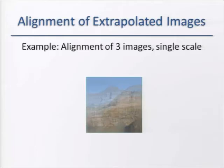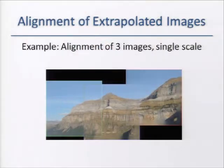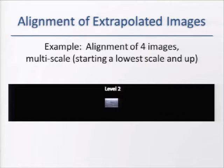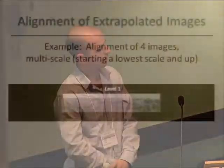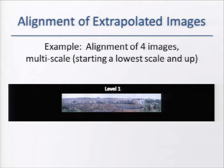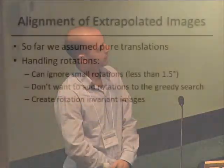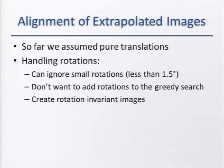Here is alignment of three images in a single scale — you can see the images slide to their approximately correct location. And here is another example in a multi-scale setup, starting from the coarsest level, again sliding to their approximately correct location at original resolution. So far we have assumed pure translation between images. Of course if we have rotations we'd like to deal with them as well. For small rotations, we can basically ignore them because the inpainting step at the end of the process conceals these rotations. But for more significant rotations, we wouldn't like to add rotation to the grid search because it increases complexity significantly.